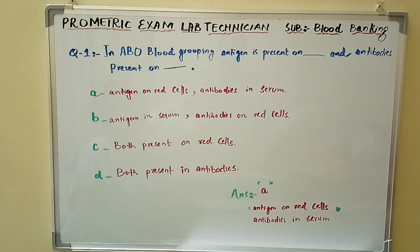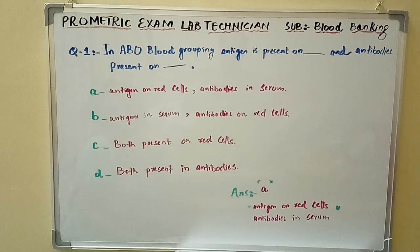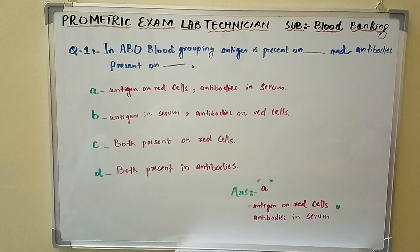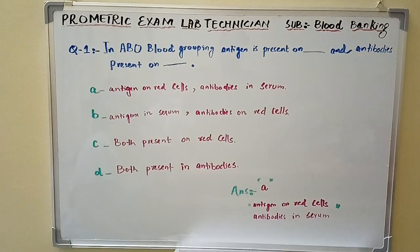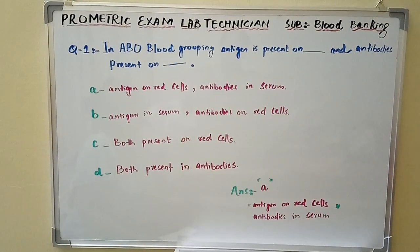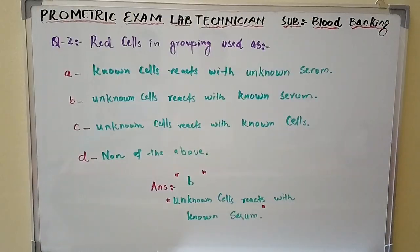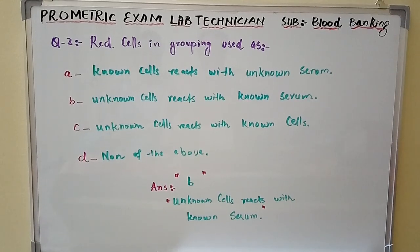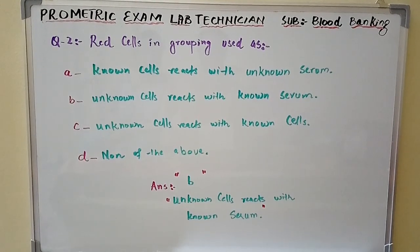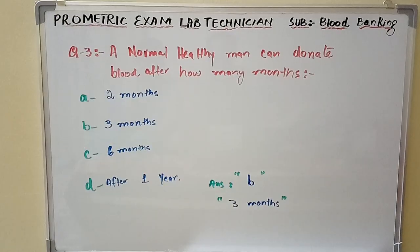Question number one: In ABO blood grouping, antigen is present on dash and antibodies present on dash — the answer is Option A: antigen on red cells and antibodies in serum. Question number two: Red cells in grouping used as — the answer is Option B: unknown cells react with known serum.